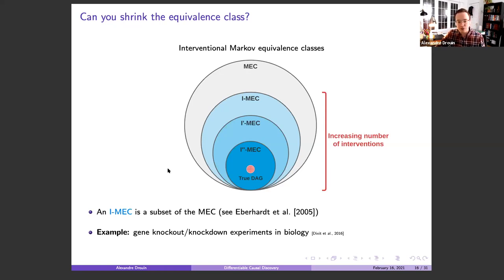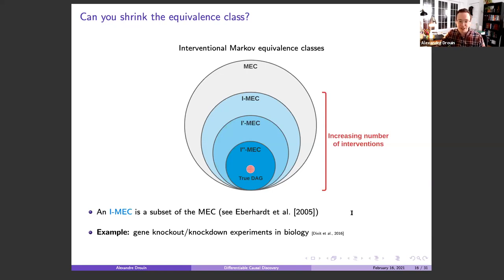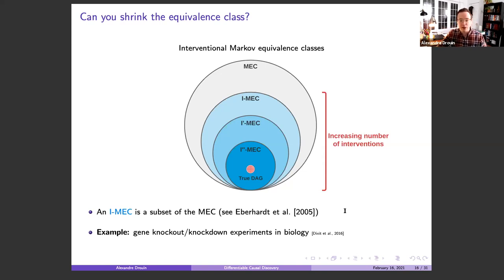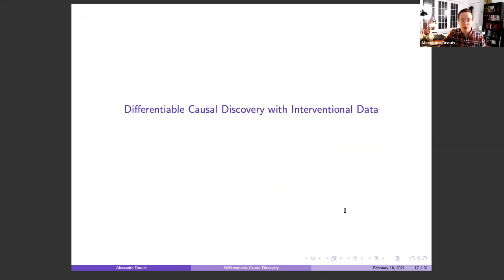A practical example from biology: you can perform gene knockout with gene expression data. A knockout inhibits the expression of a gene, so you collect data where that gene has zero expression. You look at a system of genes, collect data, then make an intervention — knock out one gene — collect more data, then knock out another. You're making experiments and collecting interventional data.